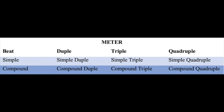We can have simple duple time — that tells us there are two beats in a bar, and that the beat gets divided into two. So in this case it would be: one and two and, one and two and, one and two and. Simple triple would be three beats divided into: one and, two and, three and, one and, two and, three and. In simple quadruple, same again: one and, two and, three and, four and, one and, two and, three and, four and.